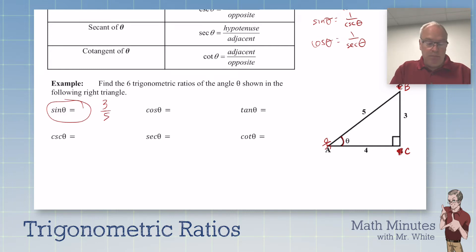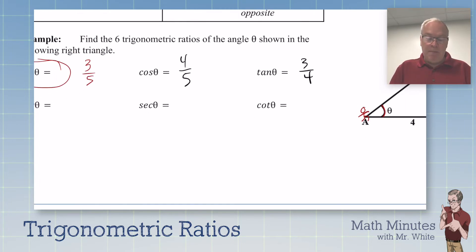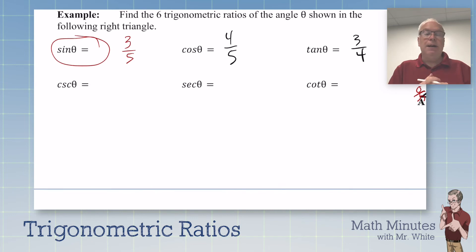Now, cosine of theta is adjacent over hypotenuse. So that would be 4 fifths. And remember, tangent involves the legs, the legs only, and it's opposite over adjacent. So that's 3 fourths. Now, often when I set these up for students, I set them up very nicely for you, in that these two functions are reciprocals. So all you do is flip over the fraction. So it becomes 5 thirds. This becomes 5 fourths. And then this one becomes 4 thirds for cotangent. So those are the trig ratios for that triangle.